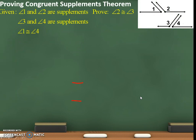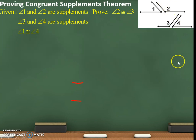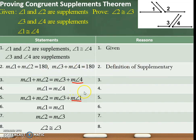Proving the congruent supplements theorem. Here is the diagram: angle 1 and 2 are supplementary, and angle 3 and 4 are supplementary — those are the given supplementary pairs. Given: angle 1 and 2 are supplements, angle 3 and 4 are supplements. Prove that angle 1 and 4 are congruent, and prove that angle 2 and 3 are congruent. The first statement is given. The second step uses definition of supplementary: 1 and 2 add to 180, and 3 and 4 add to 180.